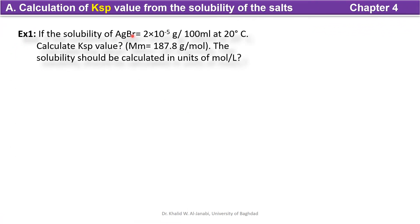Here is the first application for Ksp. In this example, we have given the solubility of AgBr, the salt AgBr, in the unit of gram per 100 milliliter at a certain temperature, and we are requested to find the value of Ksp. First of all, we have to convert the unit from gram per 100 milliliter into mole per liter.